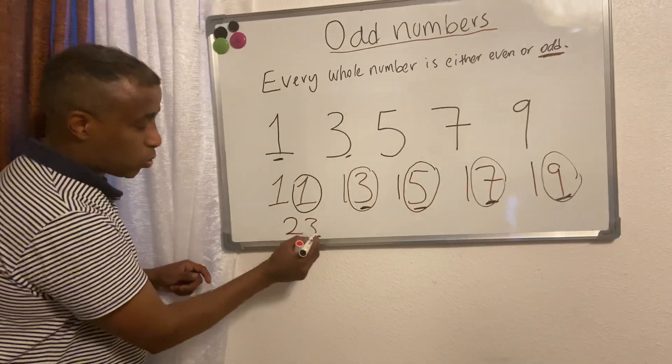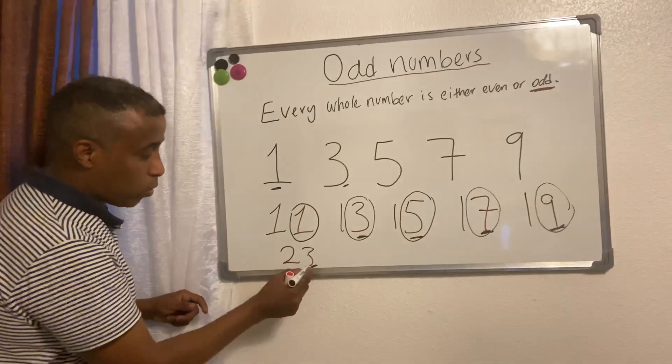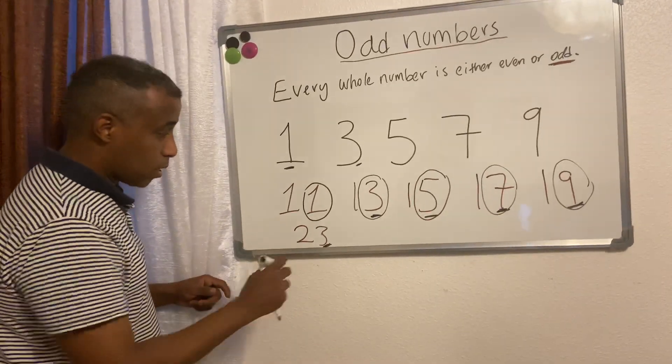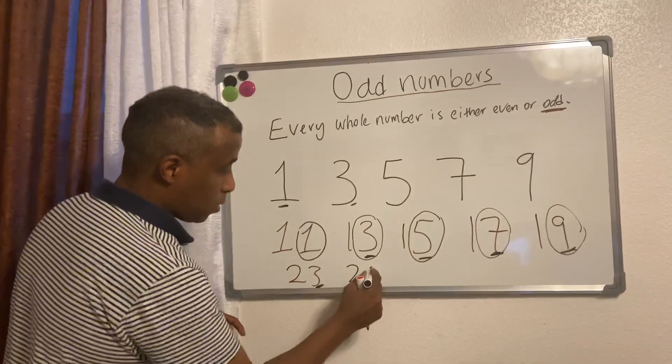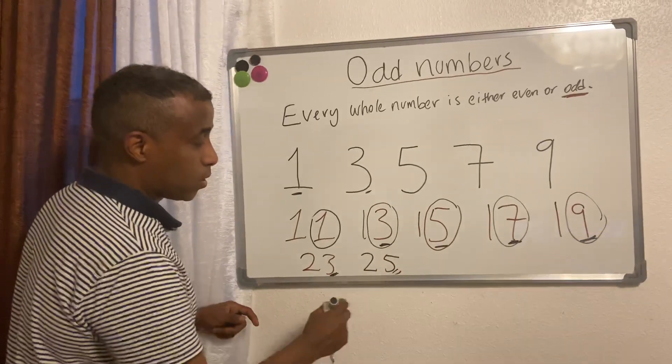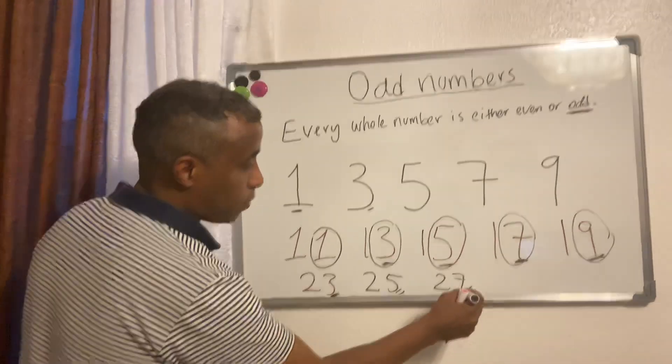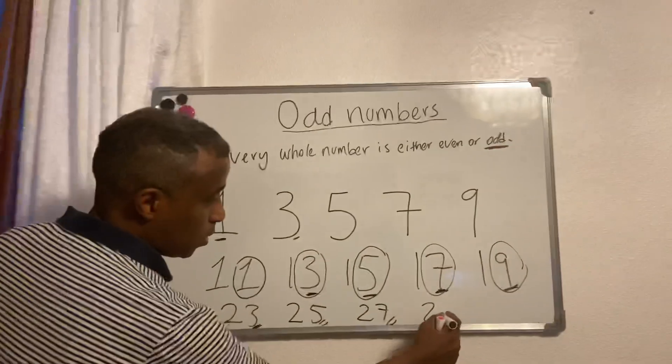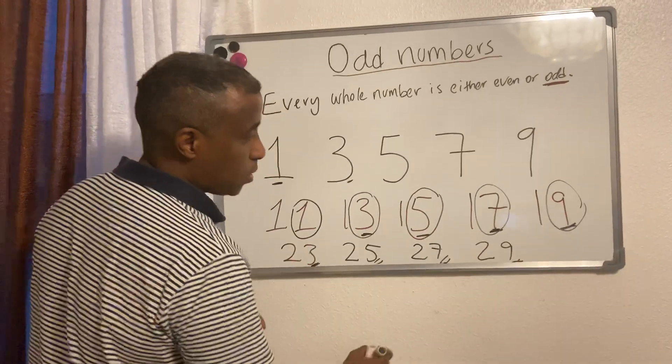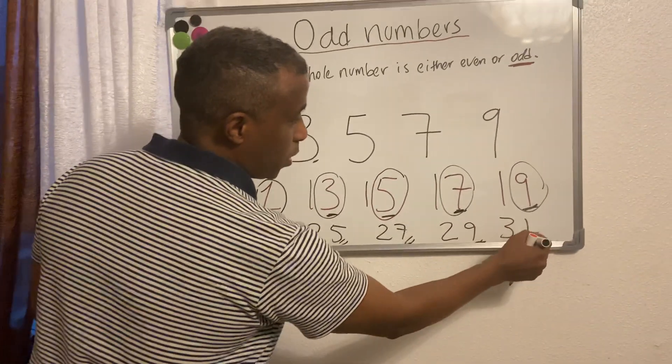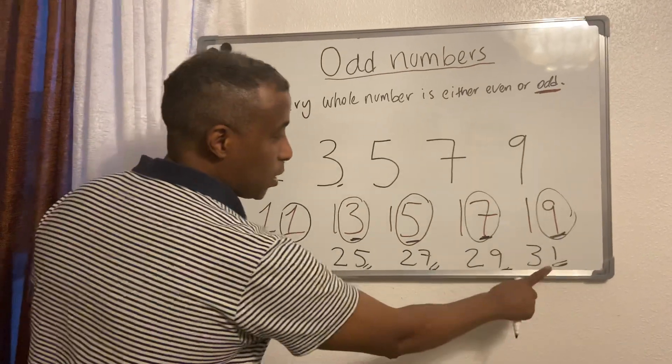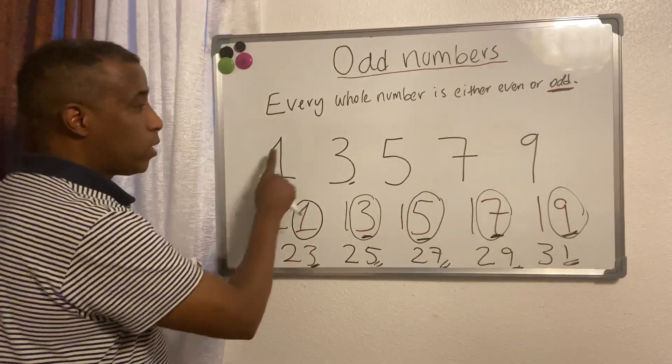when you see number 23, that means the last number is odd. 25: 5 is odd. 27: 7 is odd. 29: odd. 31: 1 is odd. See, the last number is odd. Once you know it, one to nine,